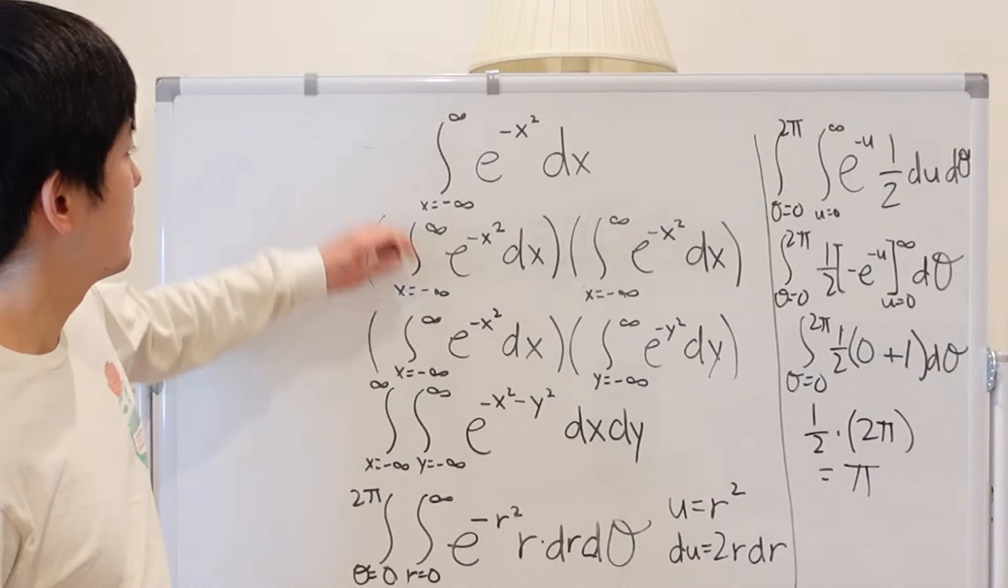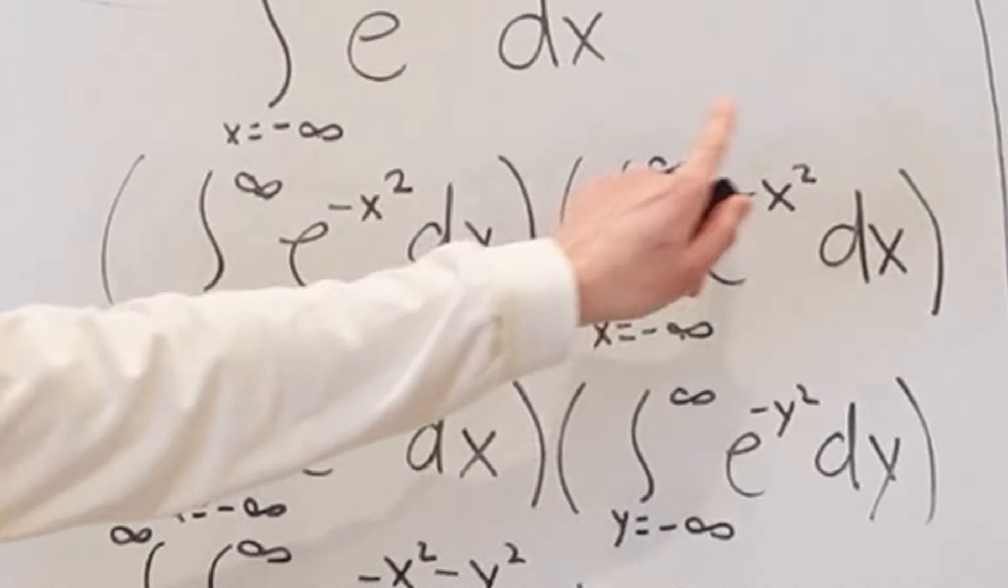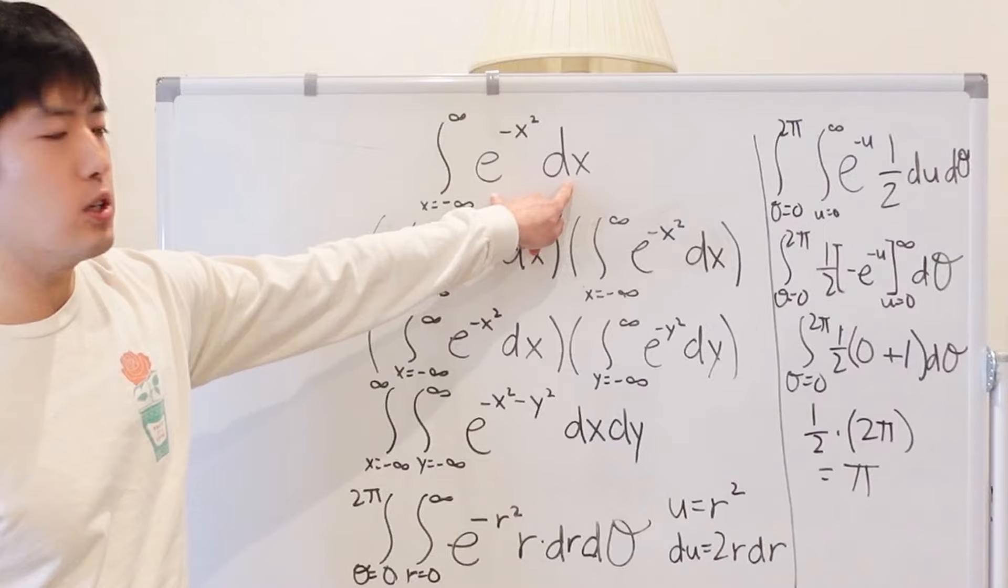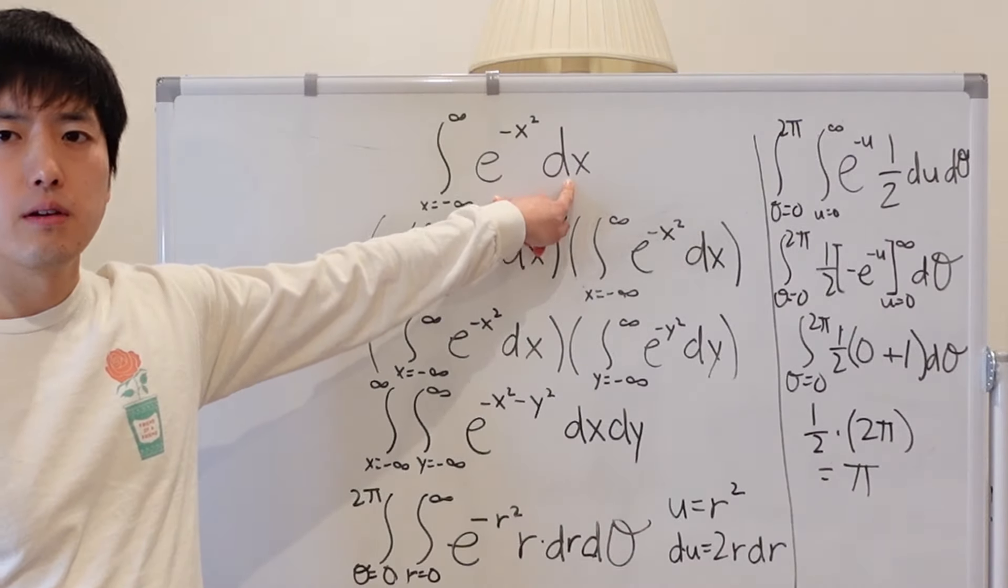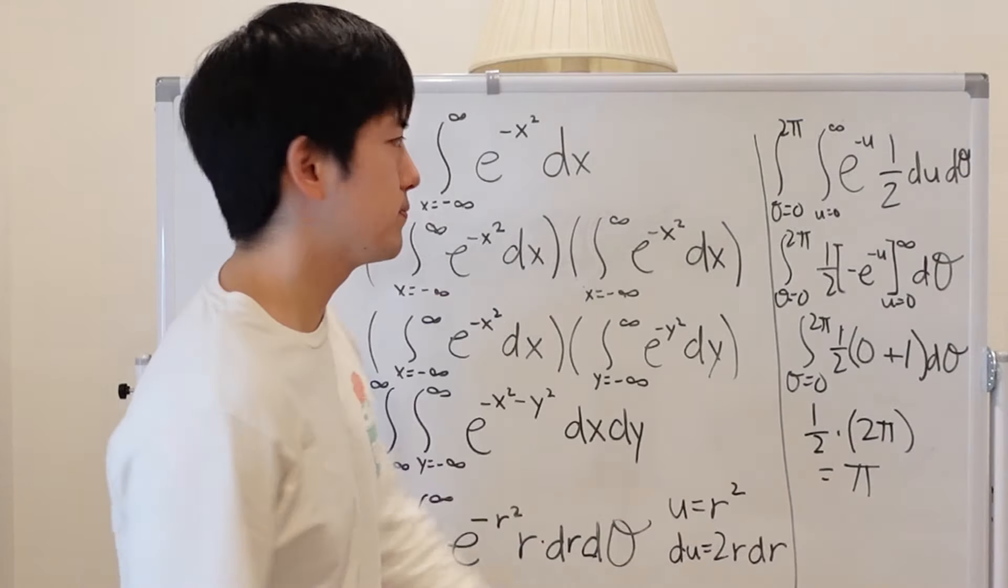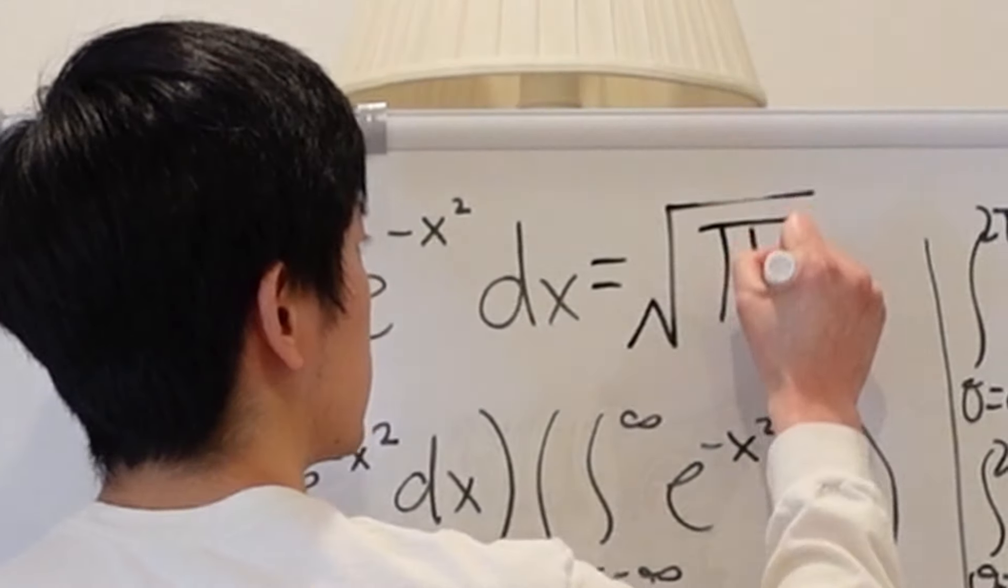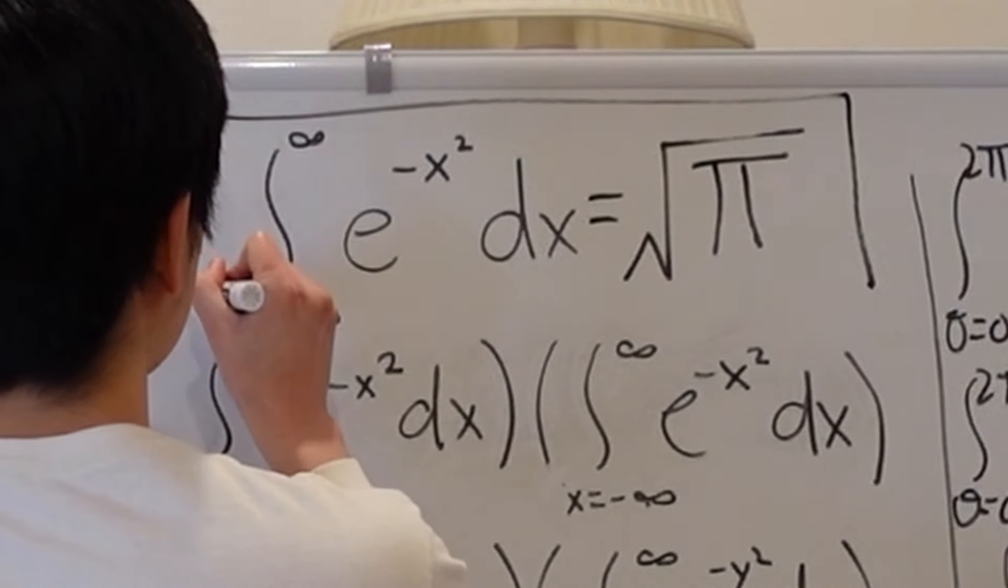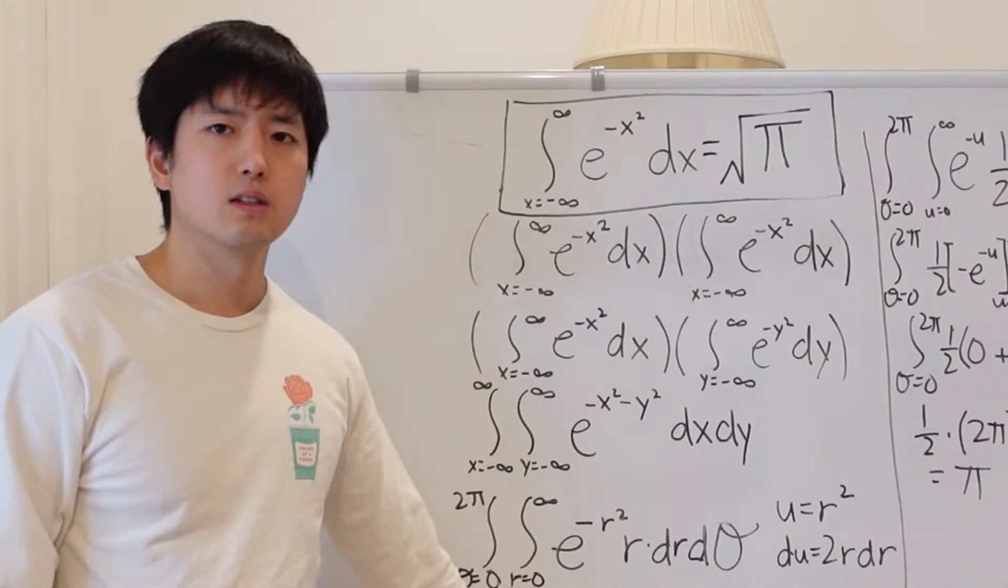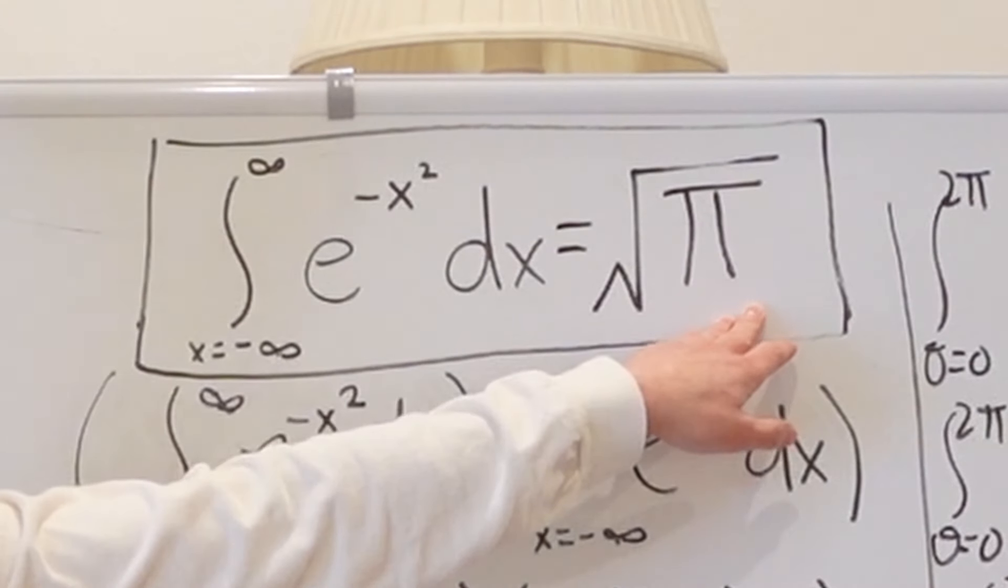But wait, we just solved for our original expression squared, which means that this original integral is simply the square root of the answer we got here. The square root of pi. Voila, there's your answer. The Gaussian integral is equal to square root of pi.